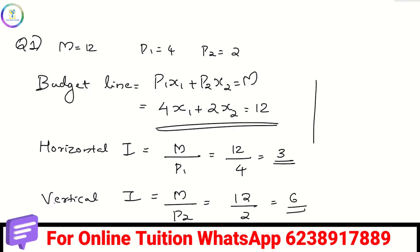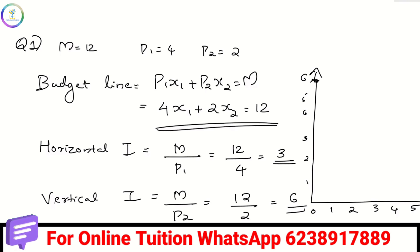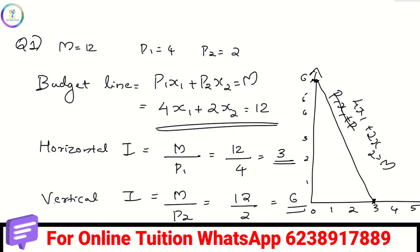We draw the budget line by marking the horizontal axis up to 3 and the vertical axis up to 6. The vertical intercept is 6 and the horizontal intercept is 3. The budget line equation is P1·x1 plus P2·x2 equals M, which gives 4x1 plus 2x2 equals 12.